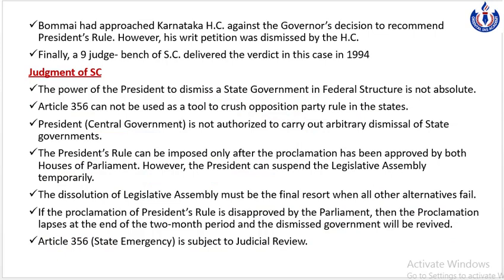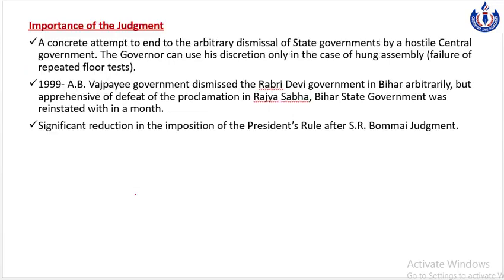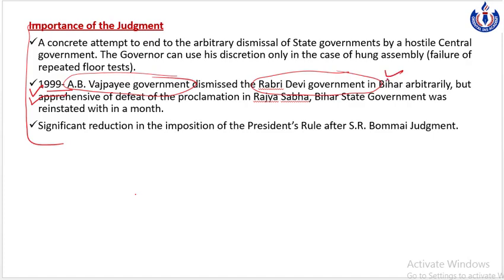Bumai case verdict ke baad se there has been a significant reduction in the usage of Article 356. Sabse pehla positive result Bumai case verdict ka 1999 mein dekhne ko mila tha, jab Atal Bihari Vajpayee government ne Bihar mein Rabri Devi government ko arbitrarily dismiss kar diya tha. But because proclamation Rajya Sabha se pass hone ki ummeed nahi thi, Bihar state government ko within a month reinstate kar diya gaya.